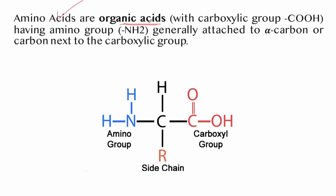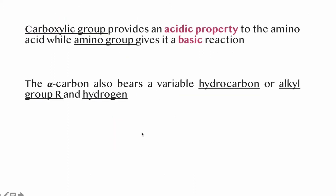Amino acids are organic acids with a carboxylic group having an amino group generally attached to the alpha carbon — the carbon next to the carboxylic group. The alpha carbon is the carbon attached next to the functional group, specifically next to the carboxyl group. This carboxylic group provides acidic property to the amino acid.